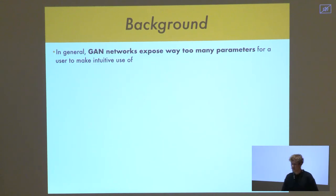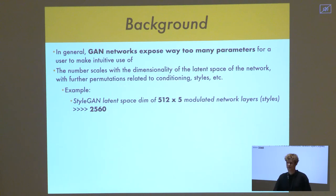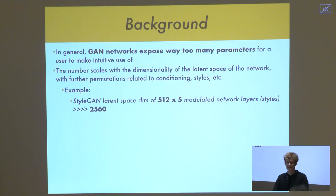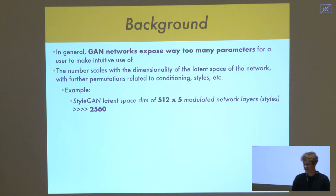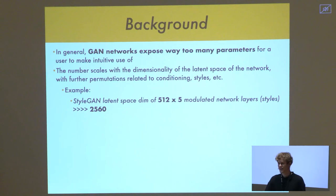In general, generative adversarial networks expose way too many parameters for anybody to make intuitive use of. The number scales with the dimensionality of your latent space and there are further permutations related to network architecture choices. As an example, a vanilla StyleGAN implementation with a latent space of 512 and five modulated network layers can have something like two and a half thousand parameters. So this is totally ridiculous to expect anyone to use.